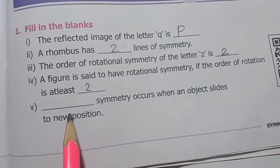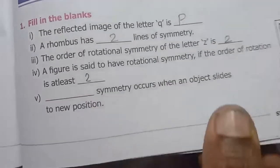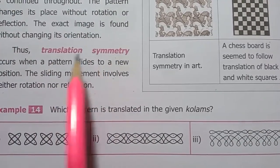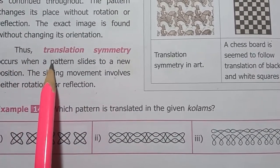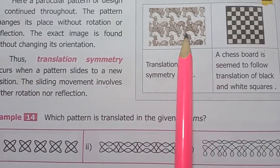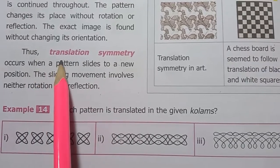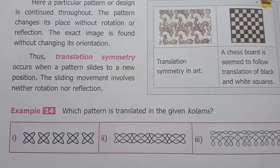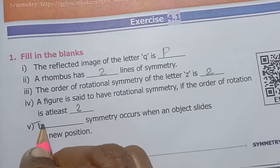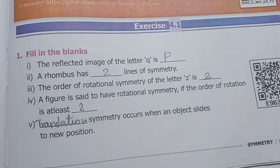Fifth one: dash symmetry occurs when an object slides to a new position. Translation symmetry occurs when a pattern slides to a new position. So the answer is translation symmetry.